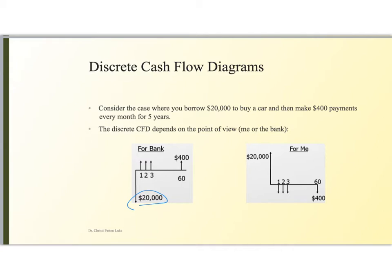From my point of view I was given twenty thousand dollars so that's income but every month I pay out four hundred dollars for sixty months. So the same information just with a different point of view.